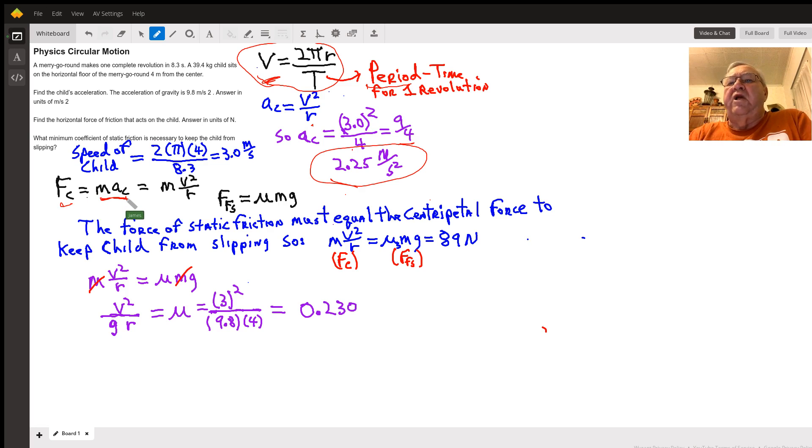The force of static friction is equal to the coefficient, how smooth or rough, times the normal force, which in this case would be equal to the child's weight, which would be mg.